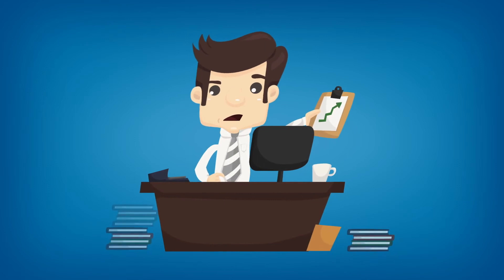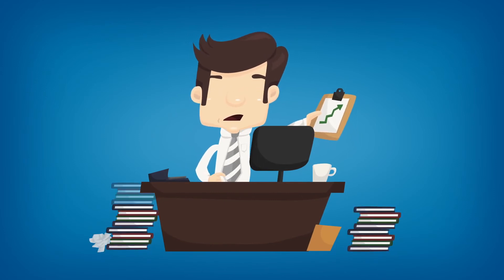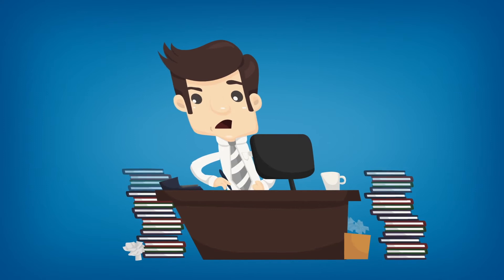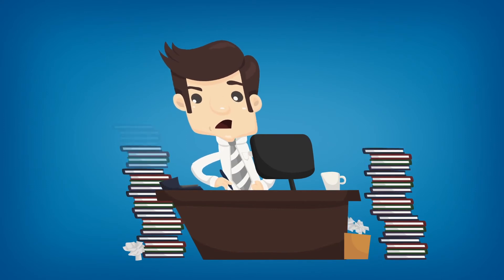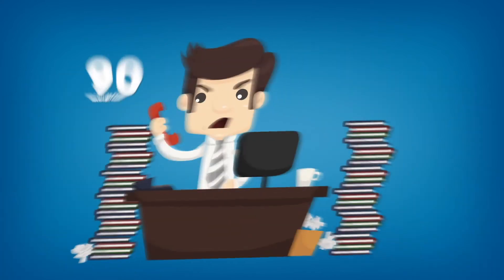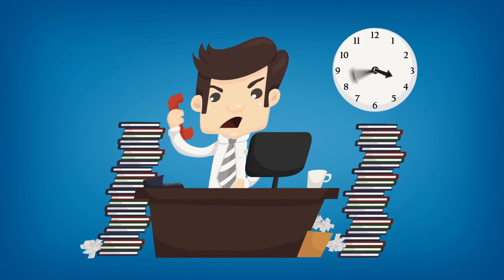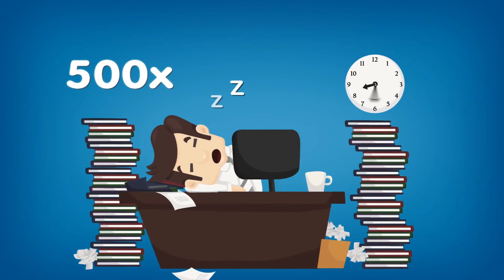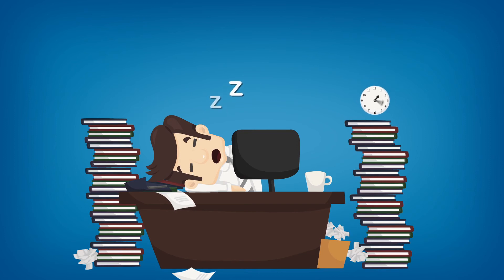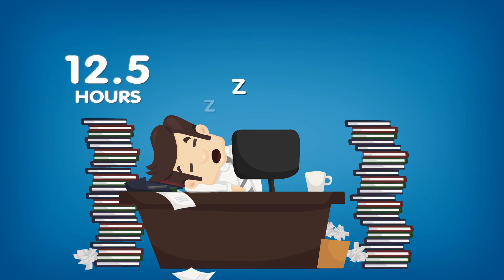Sam enters the items into the JDE form and submits each one manually. Sam does all the work. This process takes on average 90 seconds per item, and he needs to do this 500 times. Using standard JDE functionality, it will take Sam 12.5 hours to complete.